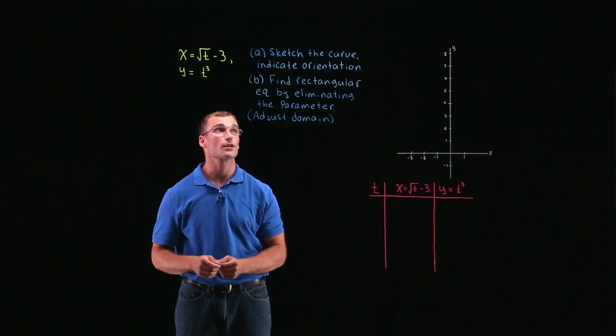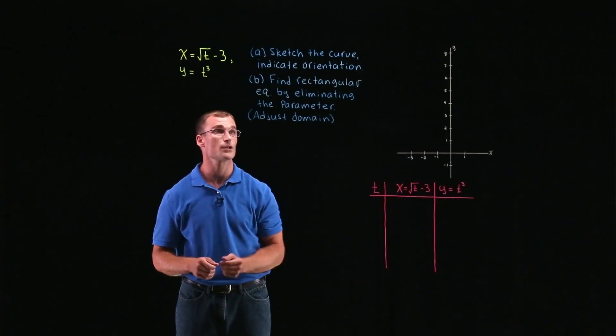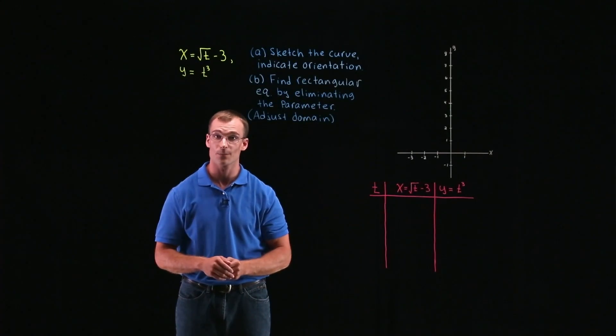A, we're going to sketch the curve and then indicate the orientation. And then B, we're going to find the rectangular equation by eliminating the parameter and adjusting the domain if we need to.